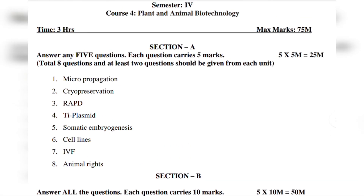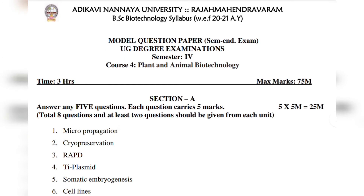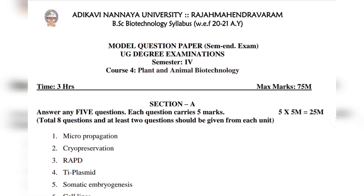This is the Biotechnology 4th semester Paper 4, Plant and Animal Biotechnology model question paper. As usual, these days, without any doubt, 60-70% of questions repeat. So this is how you can prepare, and your model paper is ready.